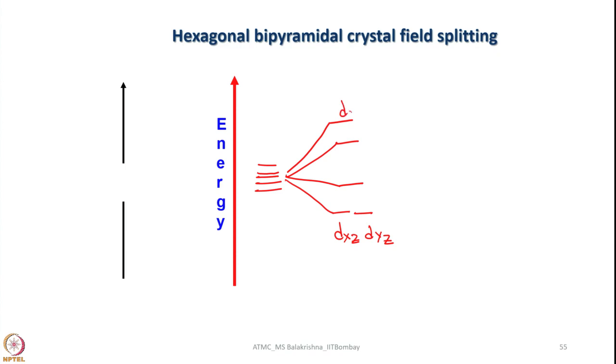So this is dz square and as usual dxy will be having maximum overlapping with 4 ligands in the plane as a result this is dxy the one left is without any problem one should be able to write what is this one this is dx minus y square. So this is how hexagonal bipyramidal crystal field splitting can be drawn in this fashion to show the relative energies of various orbitals.